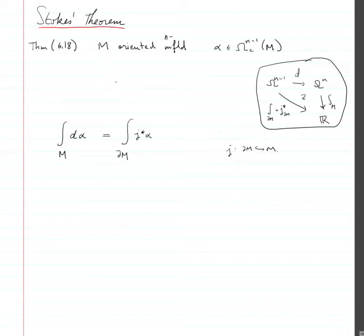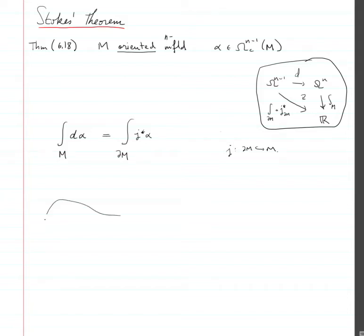There is one subtlety here which always causes a lot of confusion. M is oriented — this is important in order to define the integral. The integration along m is not defined unless m has a chosen orientation. But then on the right-hand side we have another integral, which is the integral over the boundary of m.